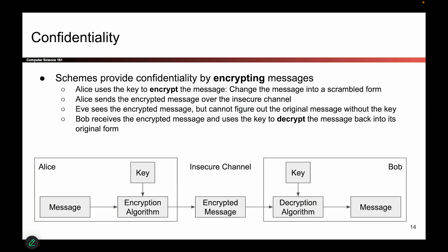In actual code, since you can't have physical boxes, you do something called encrypting messages. Instead of a box, Alice takes her message and her key as the two inputs and runs them through an encryption algorithm — a piece of code that takes a message and a key and outputs a scrambled-up version of the message. Using the key, the message is scrambled up and made hard for attackers to read.